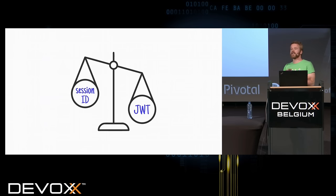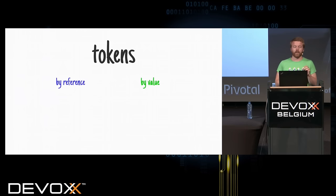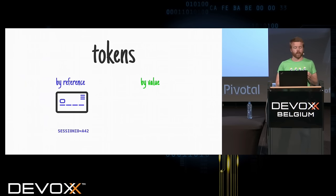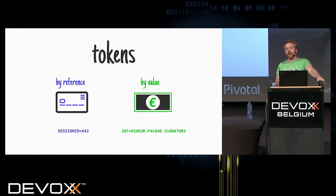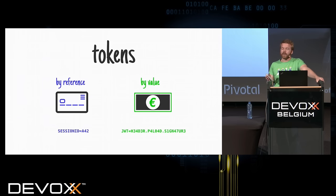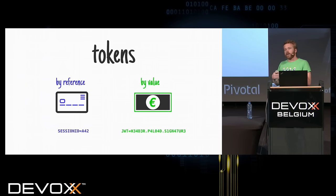We can compare session IDs and JWT because a JWT is a token, just like a session ID. There are two kinds of tokens: token by reference and token by value. A token by reference is like a credit card — if I take Antonio's credit card, I won't know if he's rich or poor; I need a third-party service, his bank, to know. But if he gives me a 500 euro bill, I know this guy is rich. With a banknote, the only thing I need to do is check that it wasn't printed at home — I need to verify it came from the European Central Bank. That's exactly how JWT works.